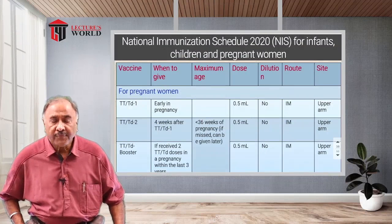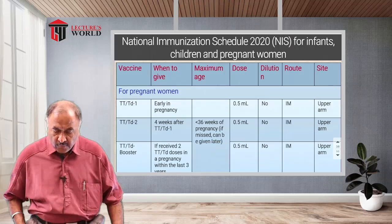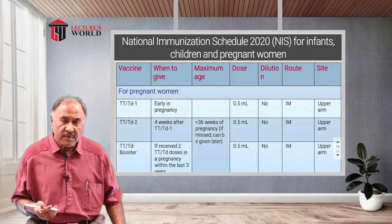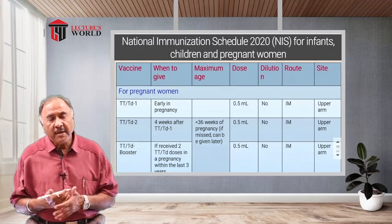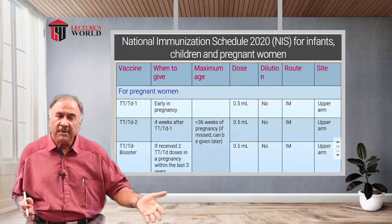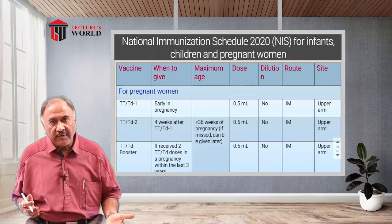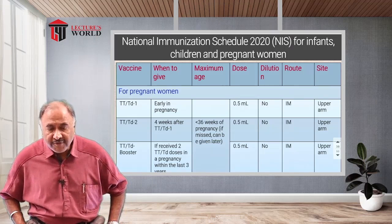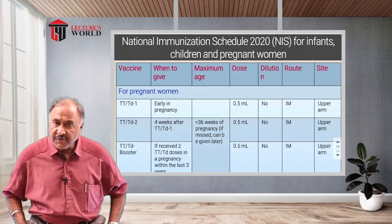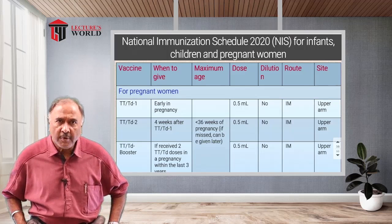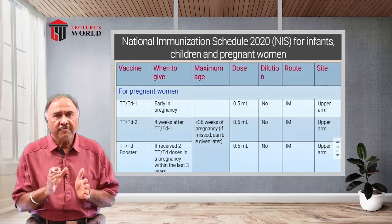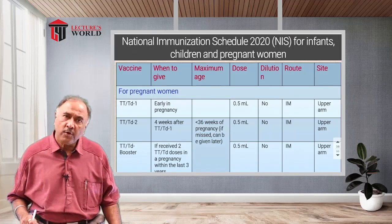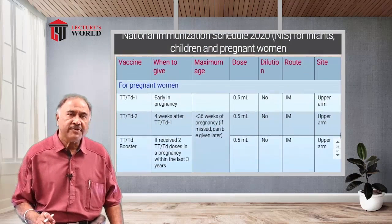Last but not least is the national immunization schedule as per 2020. These schedules are revised from time to time depending on the introduction of certain diseases and discovery of newer vaccines. The schedule covers infants, children, and pregnant women. For pregnant women, TT and TD: the first dose is given early in pregnancy in the upper arm, the second dose four weeks after the first, and a booster dose after three years — ideally before 36 weeks of pregnancy.